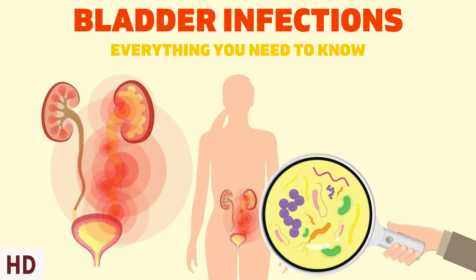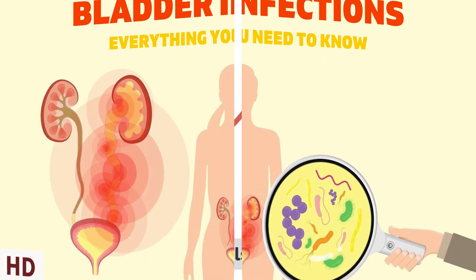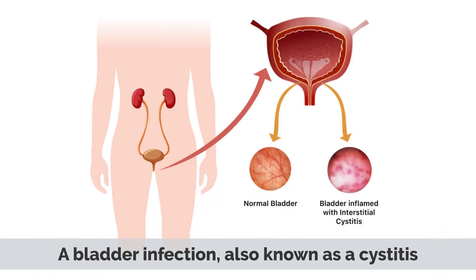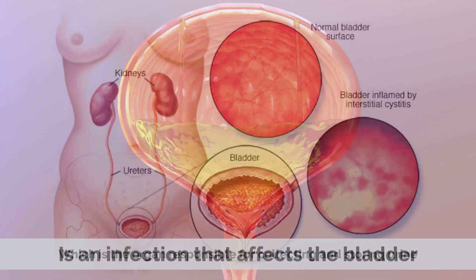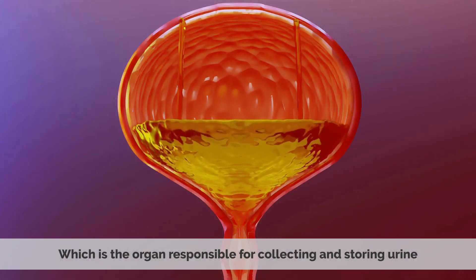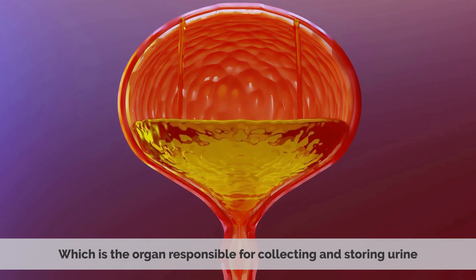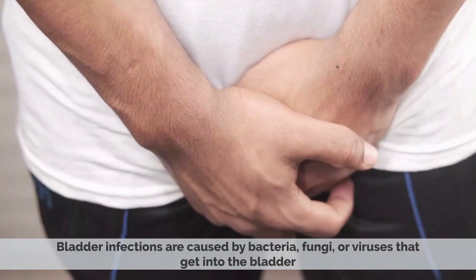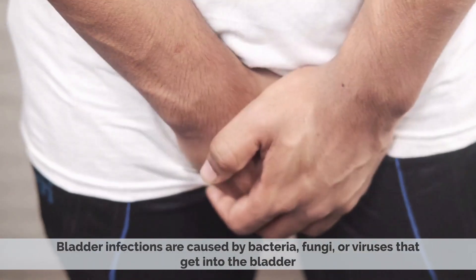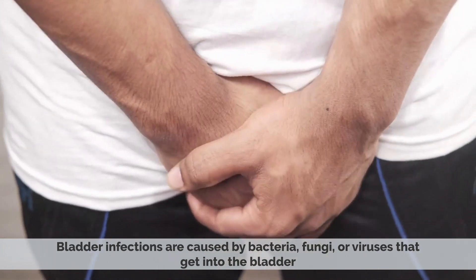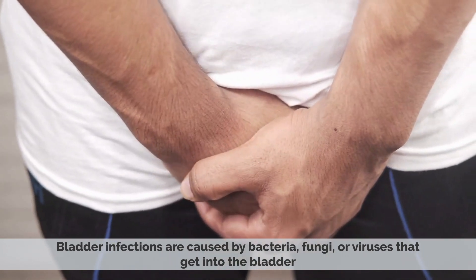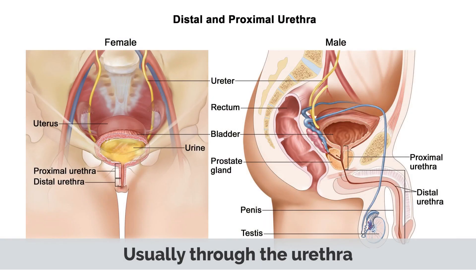Today's video topic is bladder infections. A bladder infection, also known as cystitis, is an infection that affects the bladder, which is the organ responsible for collecting and storing urine. Bladder infections are caused by bacteria, fungi, or viruses that get into the bladder, usually through the urethra.